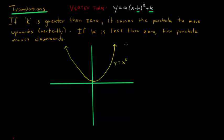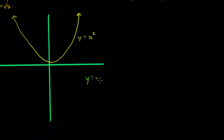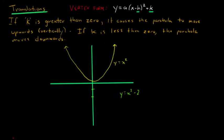In other words, k needs to be a negative number. So for instance, if I say that y equals x squared subtract 2, then the parabola for y equals x squared will just simply move down two points. And the vertex will move down two points.